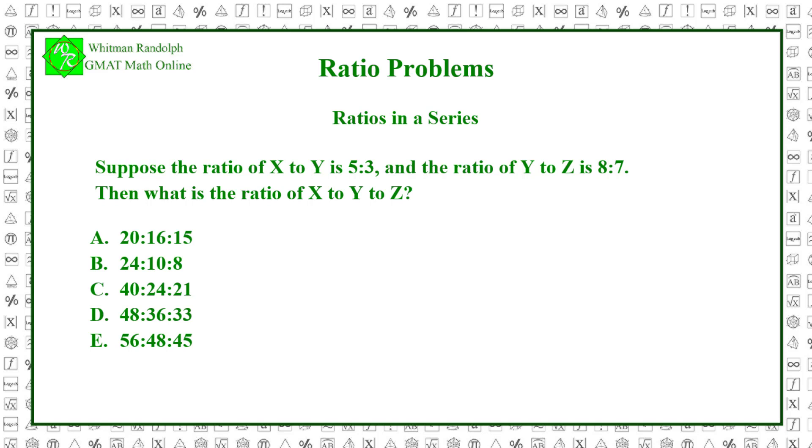We're interested in finding a ratio series of three integers. Expressing the given ratios as fractions and multiplying, we get x over y times y over z equals x over z, or 5 thirds times 8 sevenths equals 40 over 21. Thus, the ratio of x to z is 40 to 21.